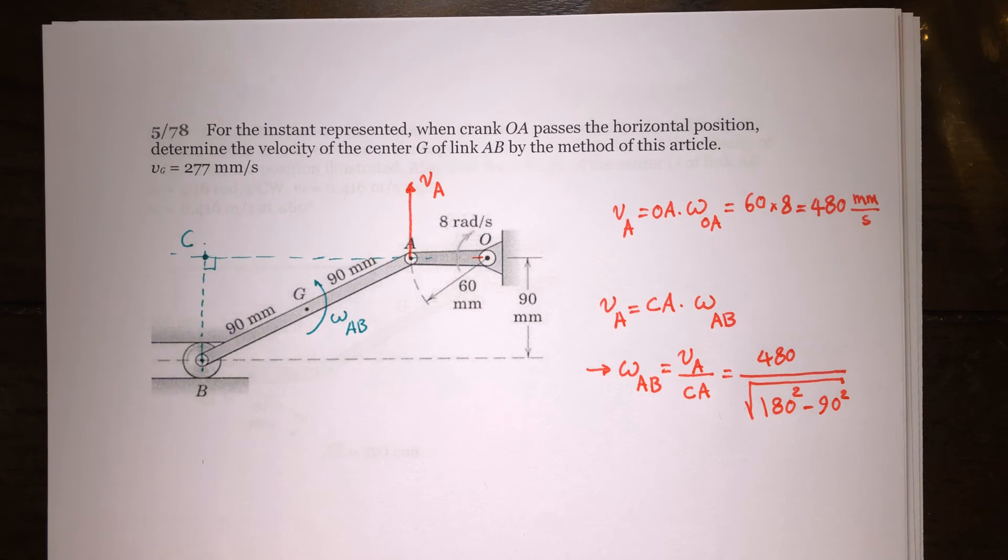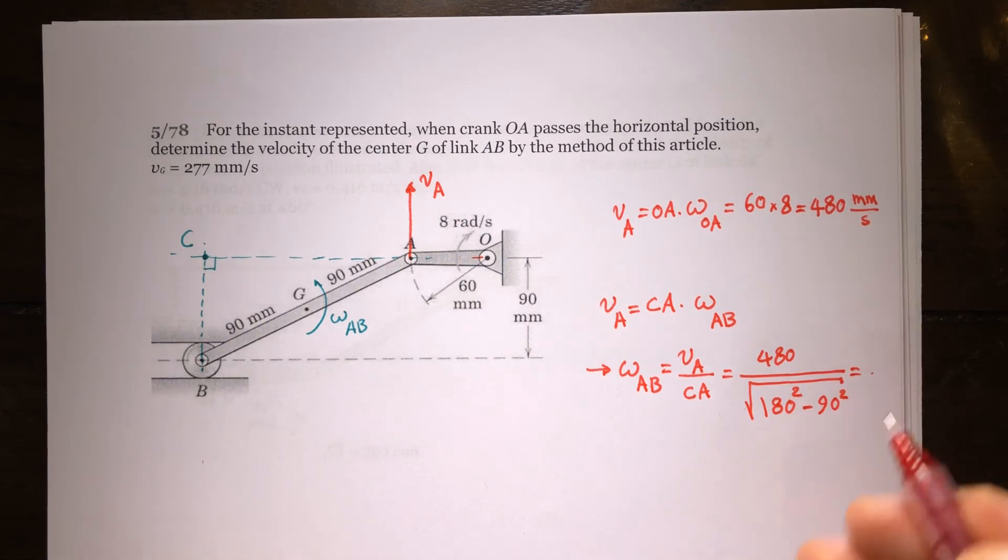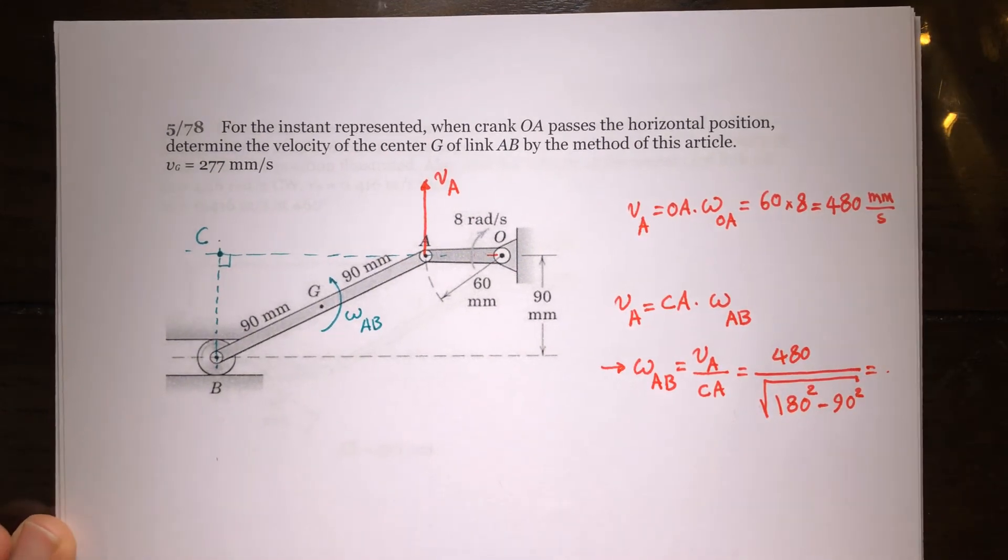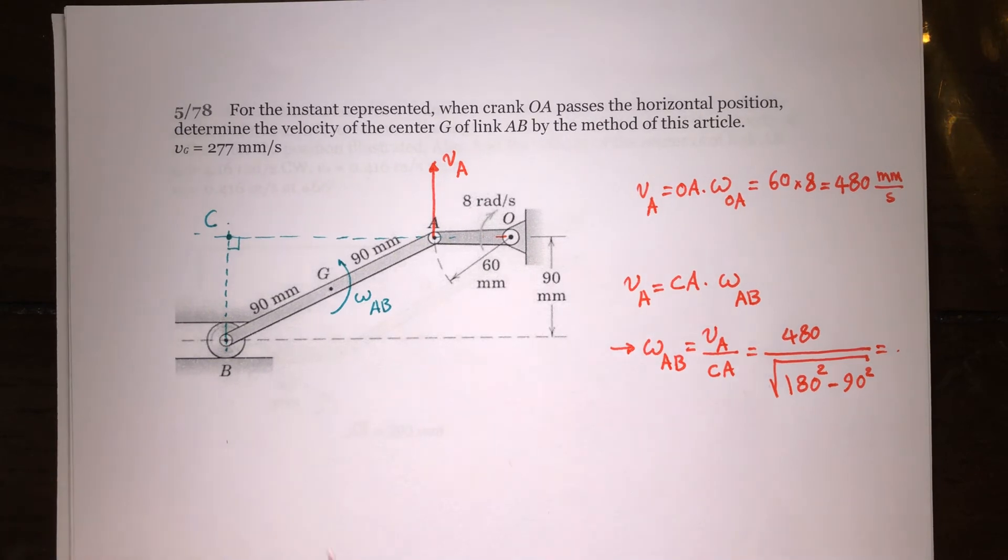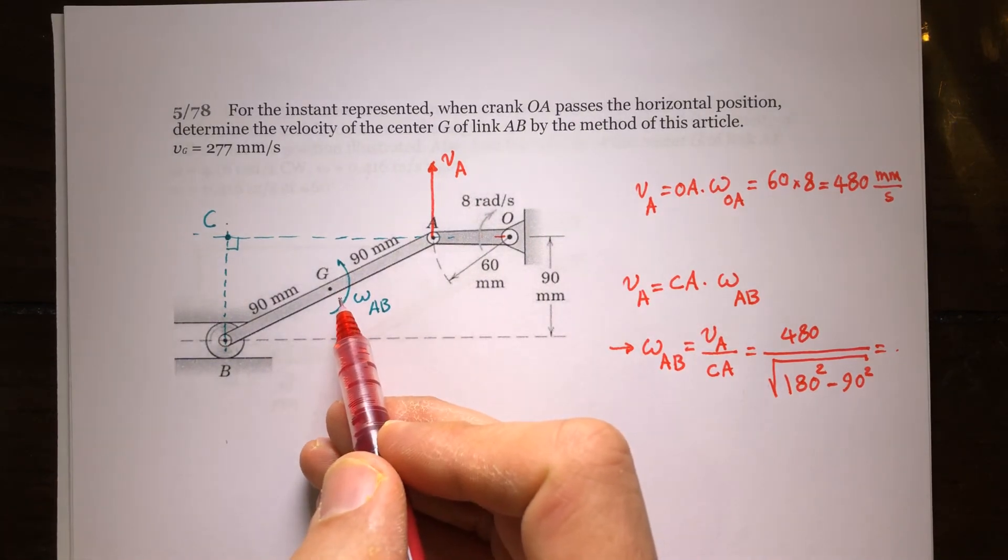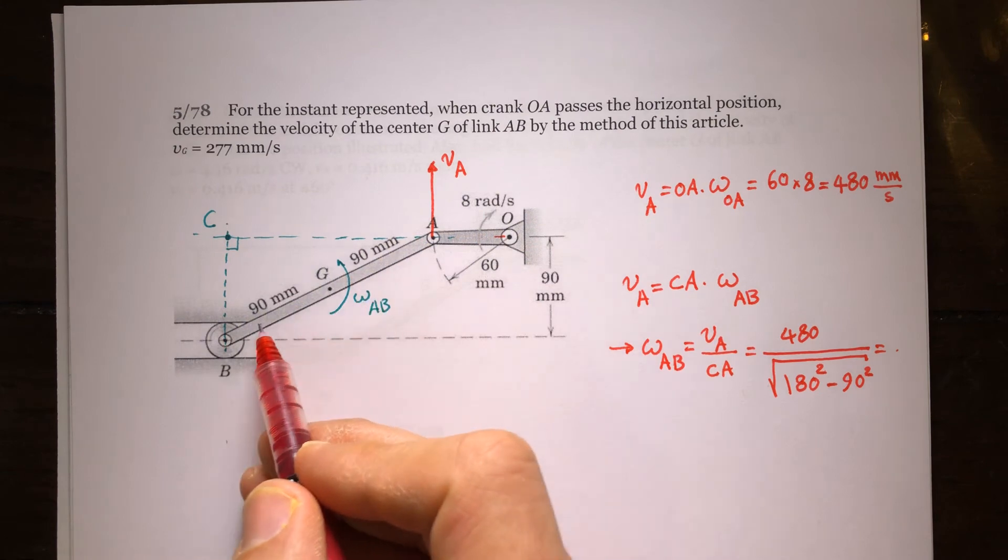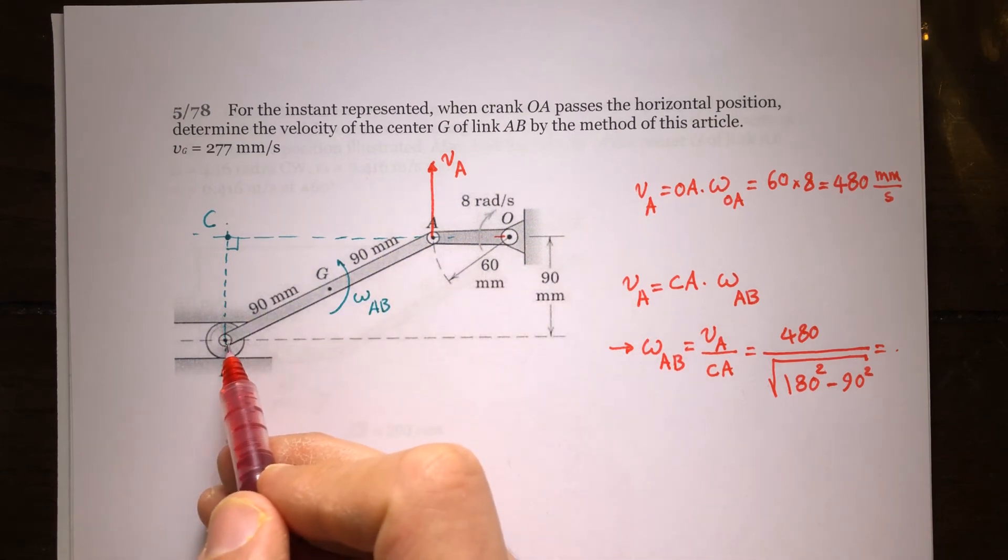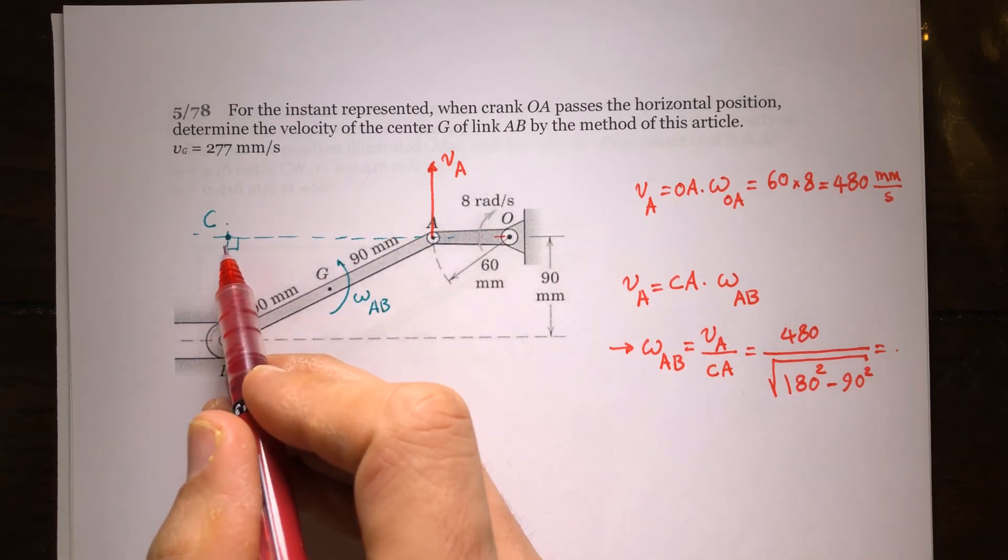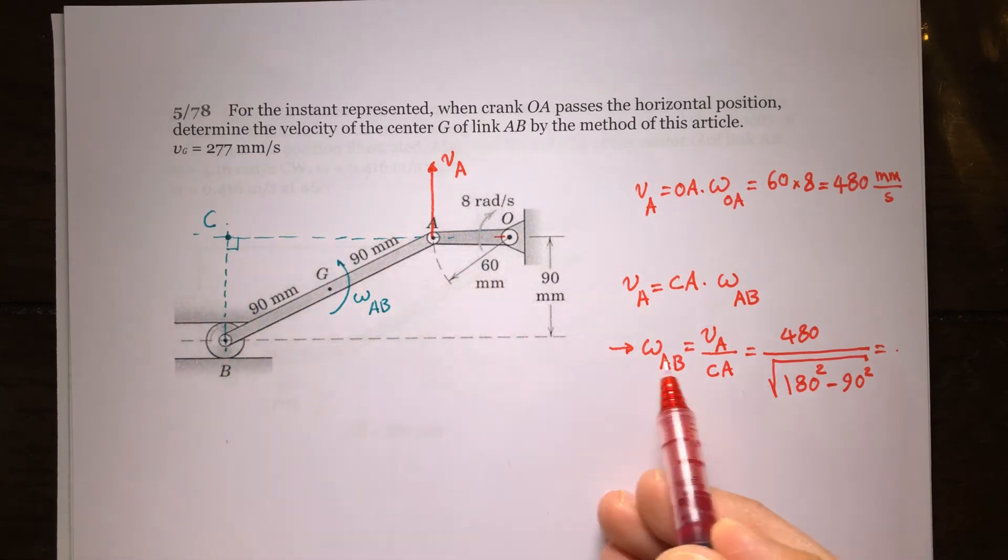So we can find the angular velocity. After finding the angular velocity, now I can find the velocity of any other point on this rigid body. For example, if I want to find the velocity of B, I only need to multiply this length to this omega: 90 times omega AB.